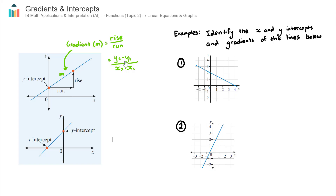Let's go through two examples: identify the x and y-intercepts and gradients of the two lines below. Starting with number one, I can see the x-intercept passes through 4, so my x-intercept is 4. I can see the y-intercept passes through this point here, which is 2, so my y-intercept is equal to 2. I now need to find the gradient.